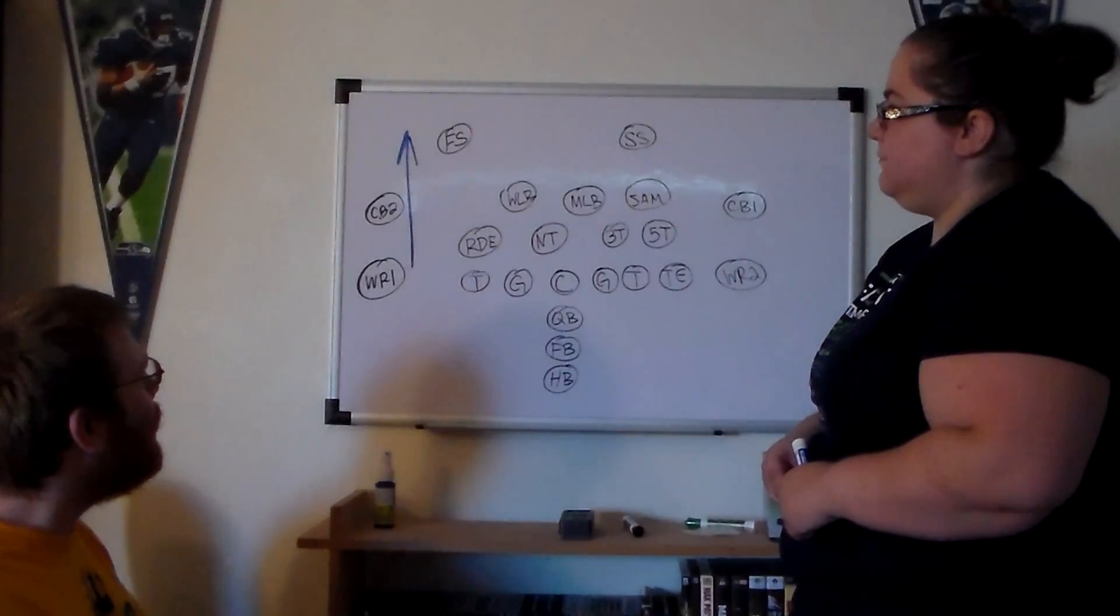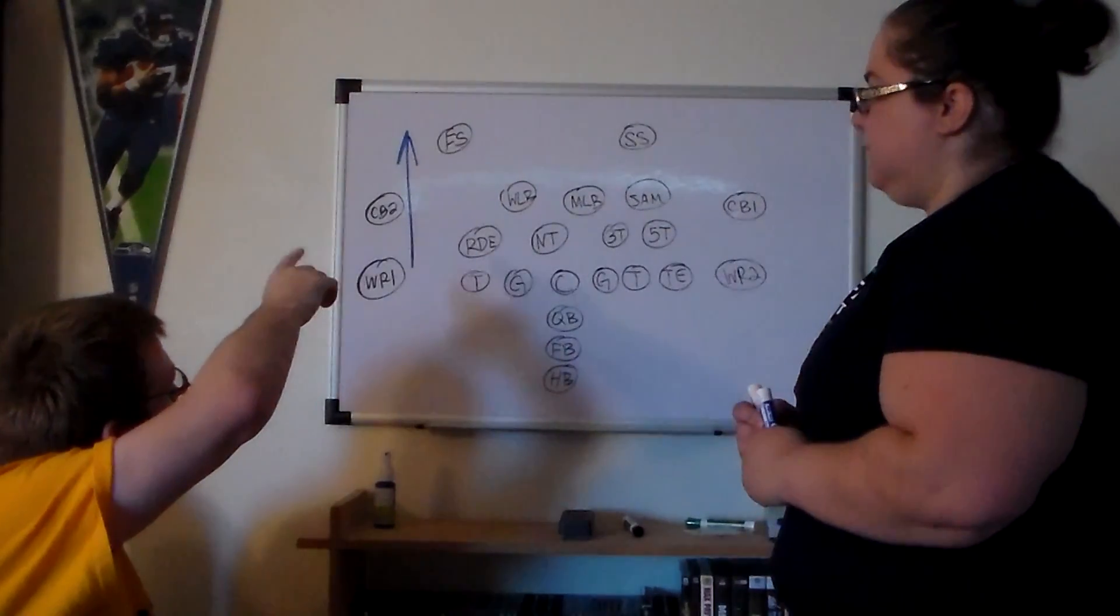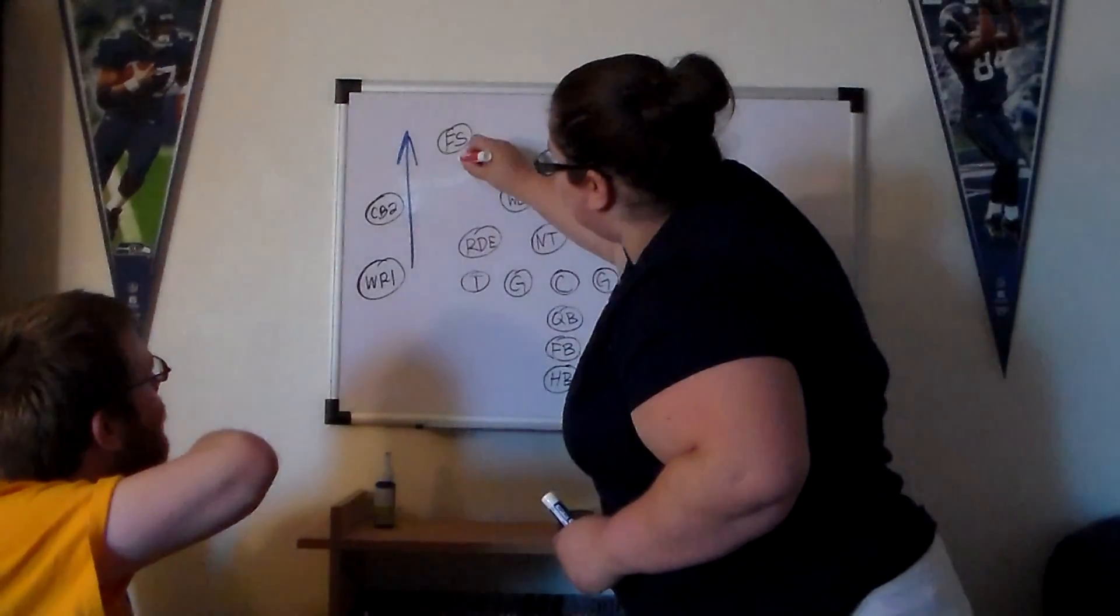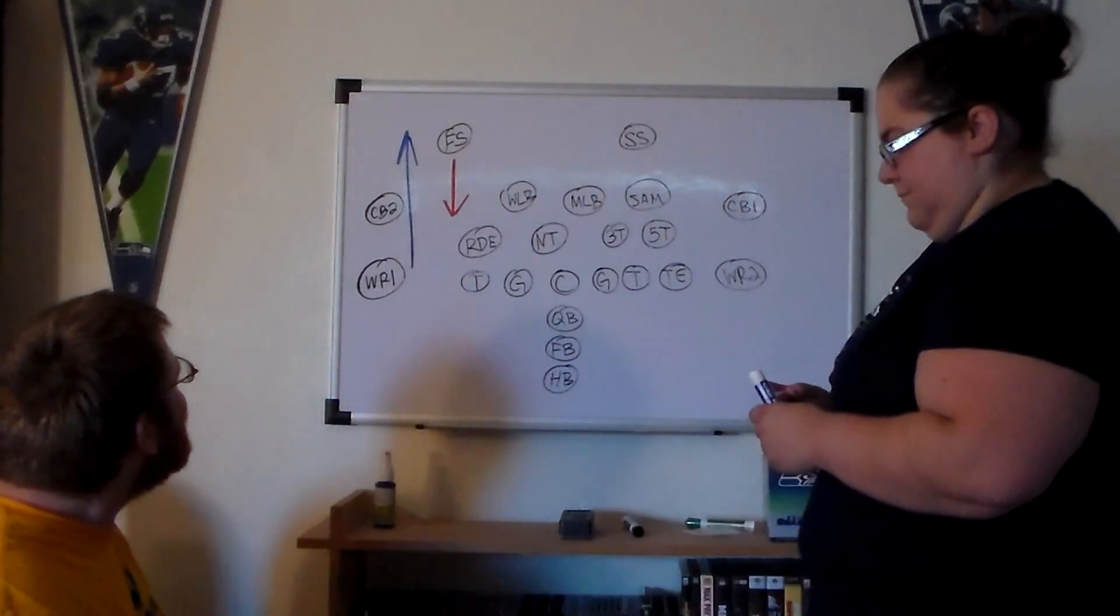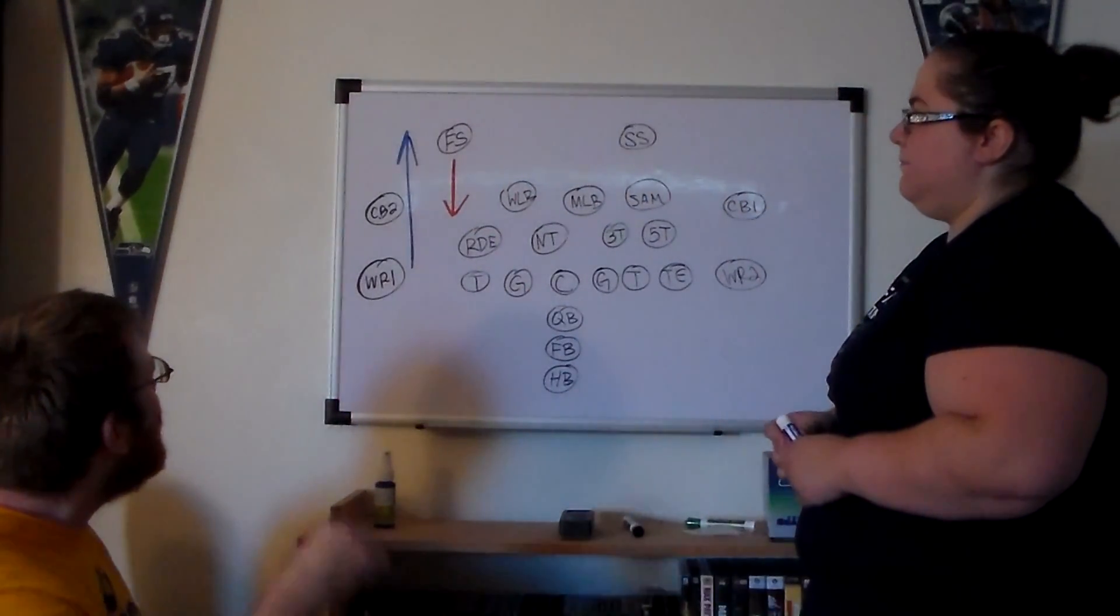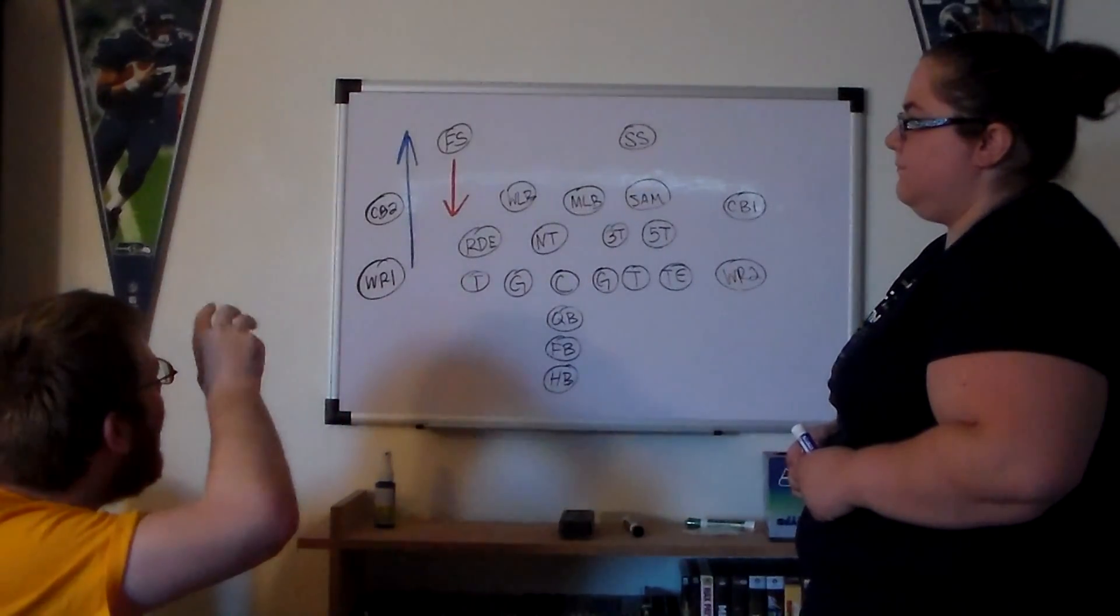So the can throw it scenario is when the free safety has come up into the box. We'll mark that with a red arrow. Now it's just the corner and the wide receiver one-on-one.